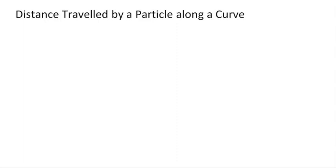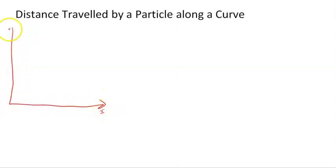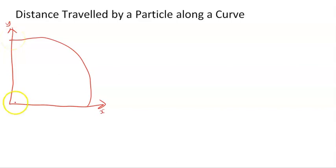In this video we're going to look at the distance travelled by a particle along a curve. The main focus is examples, but at the beginning I'll attempt to motivate the formula. Let's imagine we've got some coordinate system here with x and y, and a particle is going to follow some sort of curve. At each point along that curve there's a position vector, and we want to know how far the particle goes — what's the distance it travels.